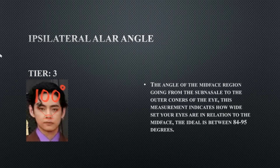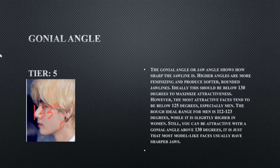His infraorbital alar angle is 100 degrees, indicating wider-set eyes. The actual eyes themselves are more wider-set, with the pupils more closer relative to the cheekbones, though this is still within the normal range but not ideal. His gonial angle is tier 5 at 133 degrees — not ideal by any means — and is more toward the feminized range. His gonial angle should be tighter with a sharper angle.